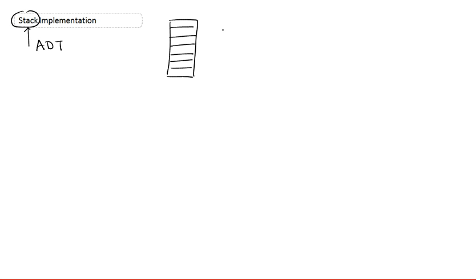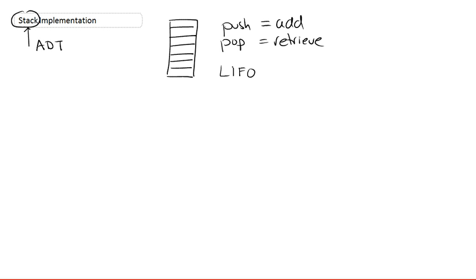In this video, we're going to be looking at the details of implementing a stack. We've already defined a stack as an abstract data type. To briefly summarize, it is a collection of elements, and this abstract data type is defined by its two operations: pushing and popping. These are the equivalent of adding and retrieving elements. This collection operates based on the last in, first out principle.